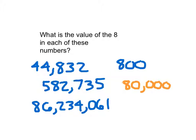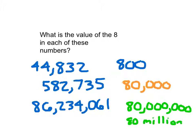Look at that last number and read it for me. Did you say 86,234,061? What is the value of the 8 in that number then? The value of that 8 would be 80,000,000. We could write it like that there. And I also would have accepted 80,000,000 there as an appropriate answer for the value of the 8.